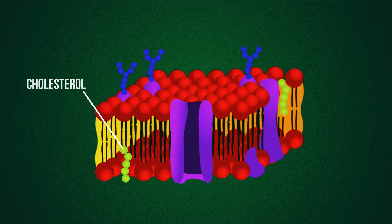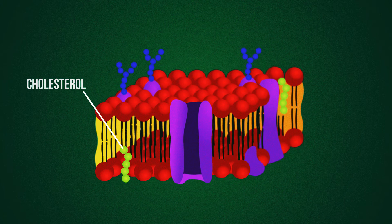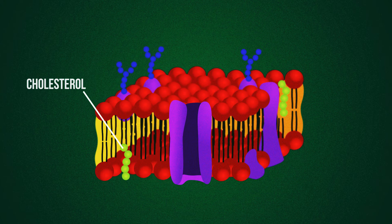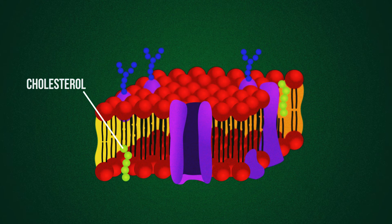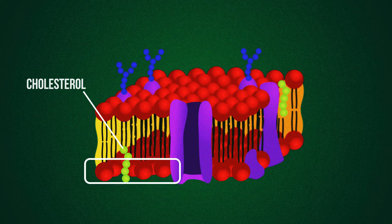Then there's cholesterol. This special molecule that's made in the liver regulates the fluidity and permeability of the cell membrane as it causes the phospholipids to stay closer together.